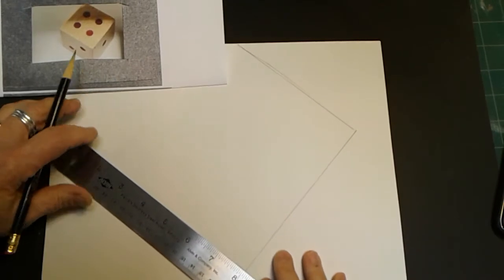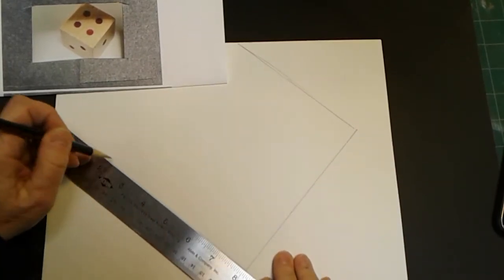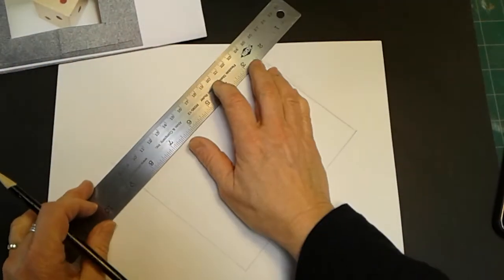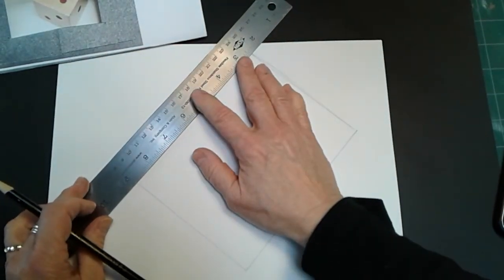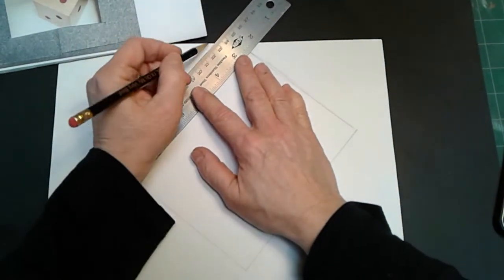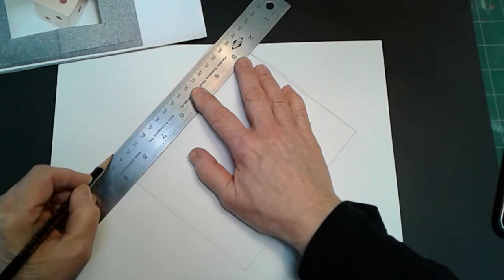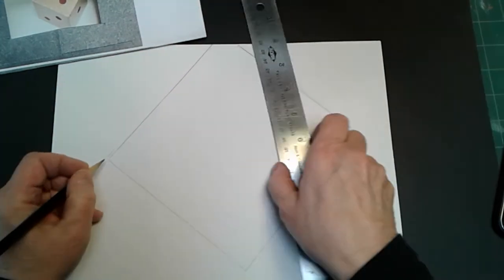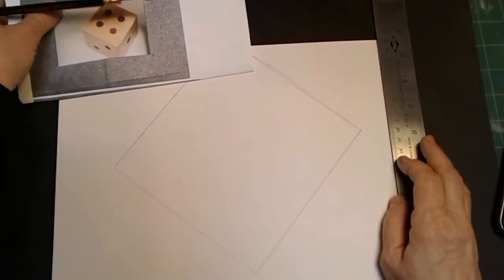And another line here. And another line there. Now, I want to keep in mind that this is a square. So I'm going to try to make it look like a square, like all the sides are even. That's pretty good.